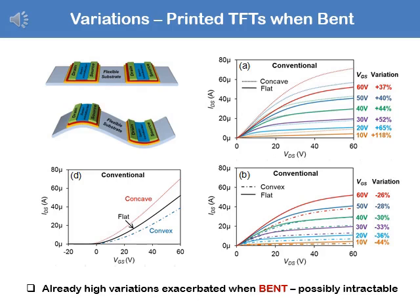Now let's look at TFTs, which are more of interest in digital circuit design. We have a substrate on the top left-hand corner which is unbent, and a bent substrate. The TFT on the left has a convex shape, and the TFT on the right is concave. When we plot the input-output characteristics, when it's concave the curve is sharper, when it's flat it's less sharp, and when it's convex it's even less sharp.